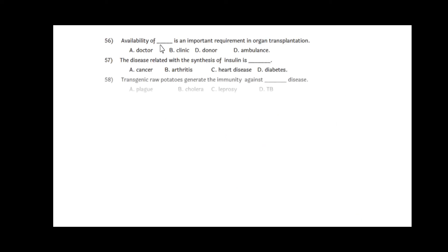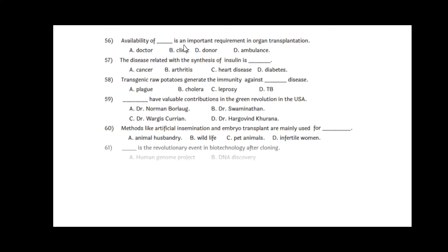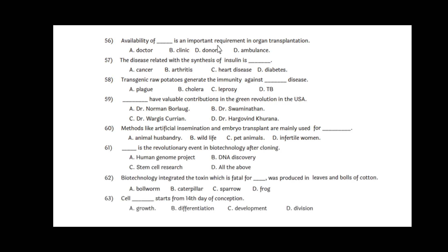Question 56: Availability of dash is an important requirement in organ transplant, and here donor is very important, so option C. Question 57: The disease related with the synthesis of insulin is diabetes, option D.